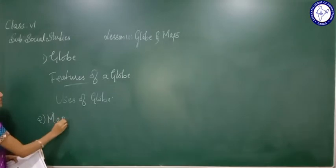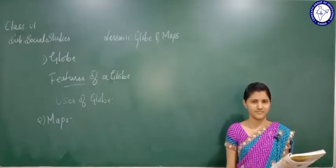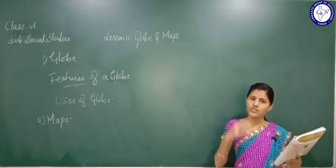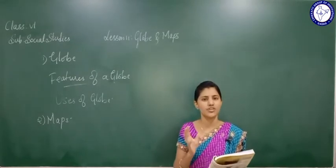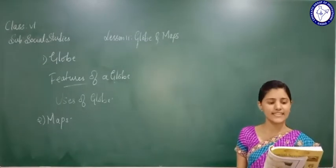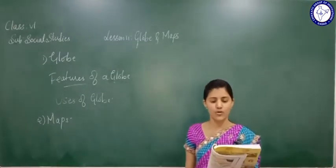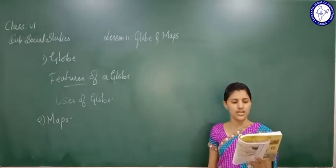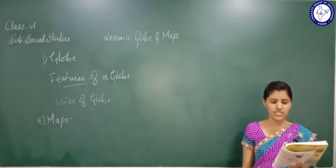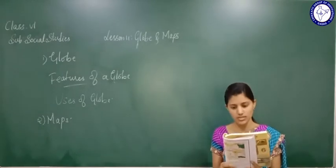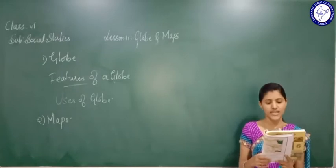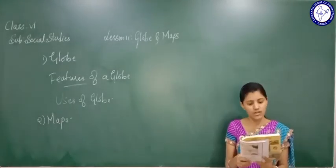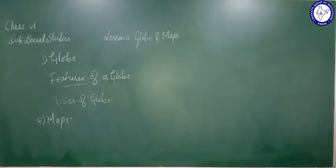We have finished studying about the globe. Now let us study what maps are. The globe can give us only very general information about the earth. Maps are very essential to get detailed information of a place, state or a country, and also about other geographical features. A diagrammatic representation of the whole earth or a part of it on a flat surface according to scale is called a map.